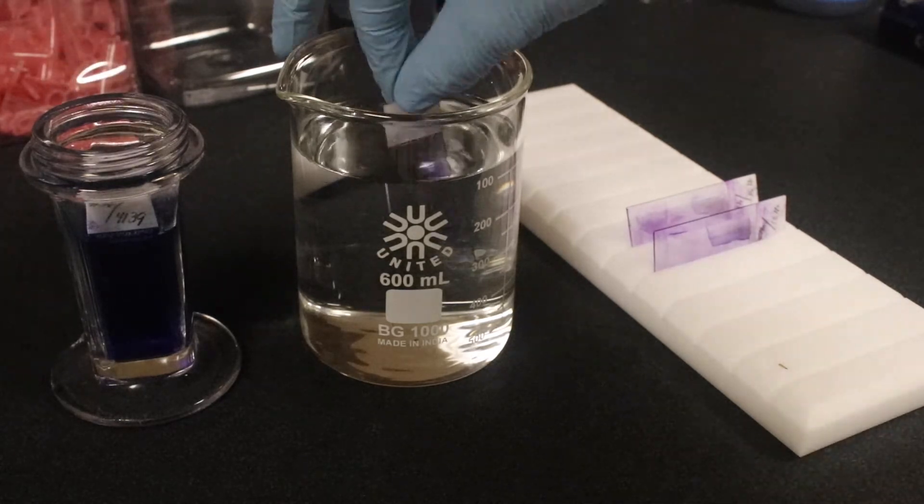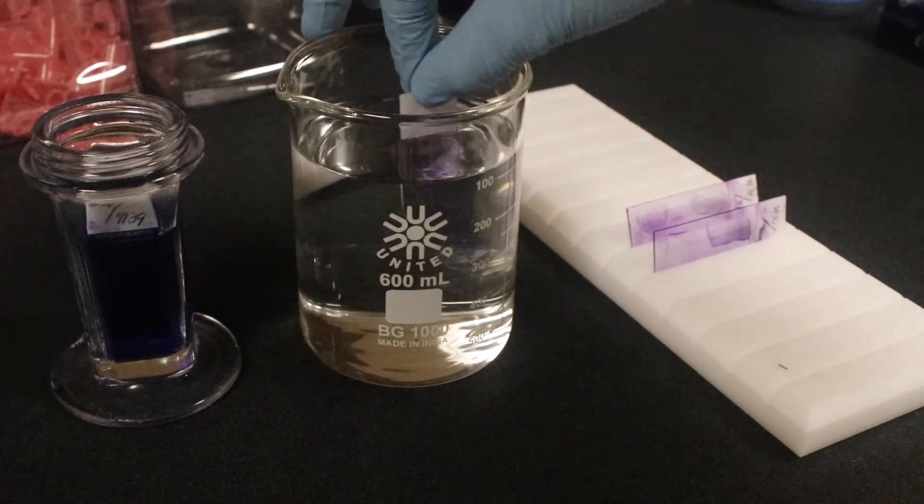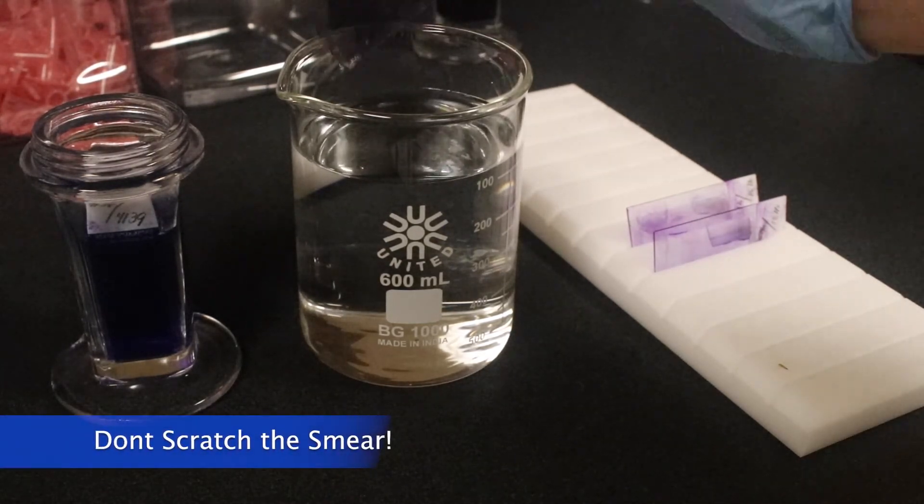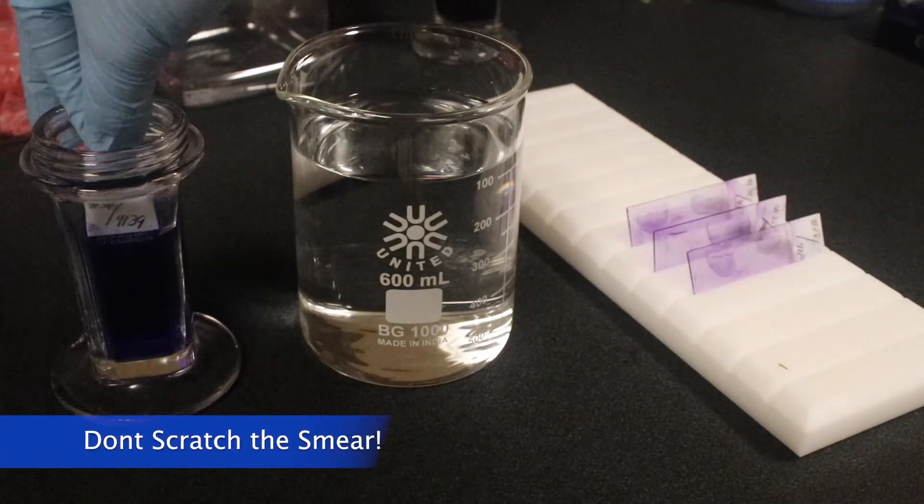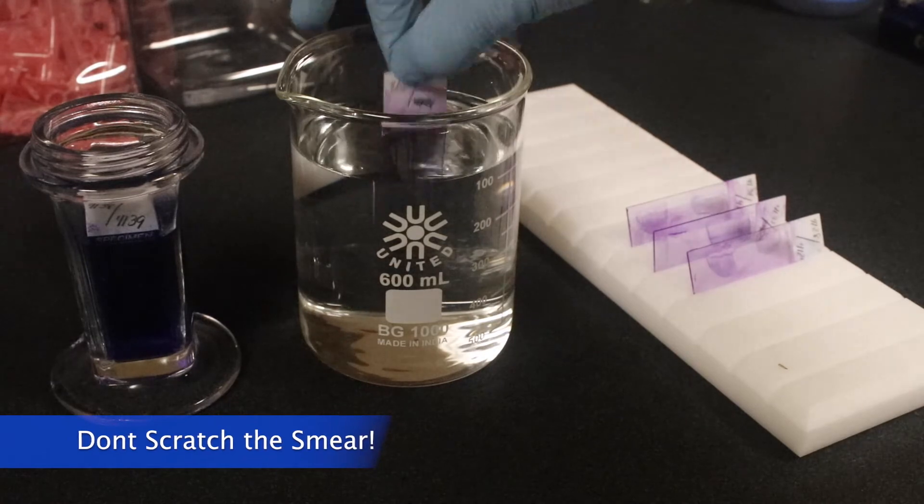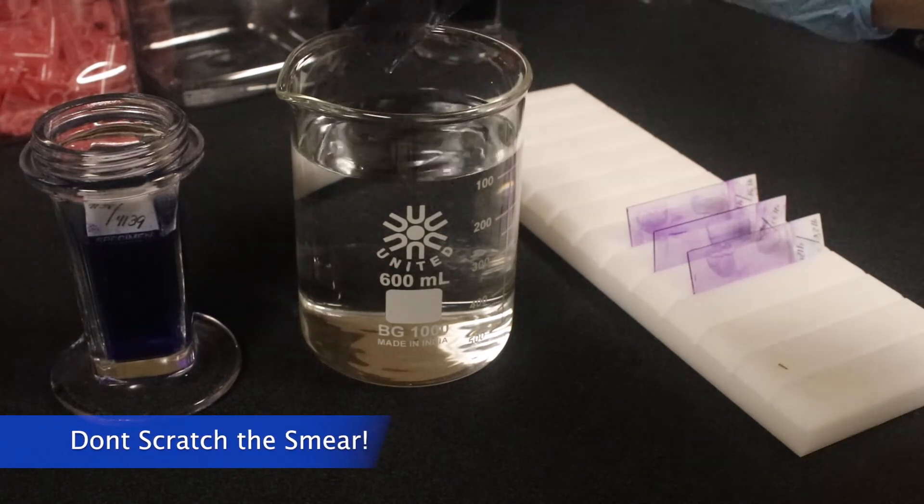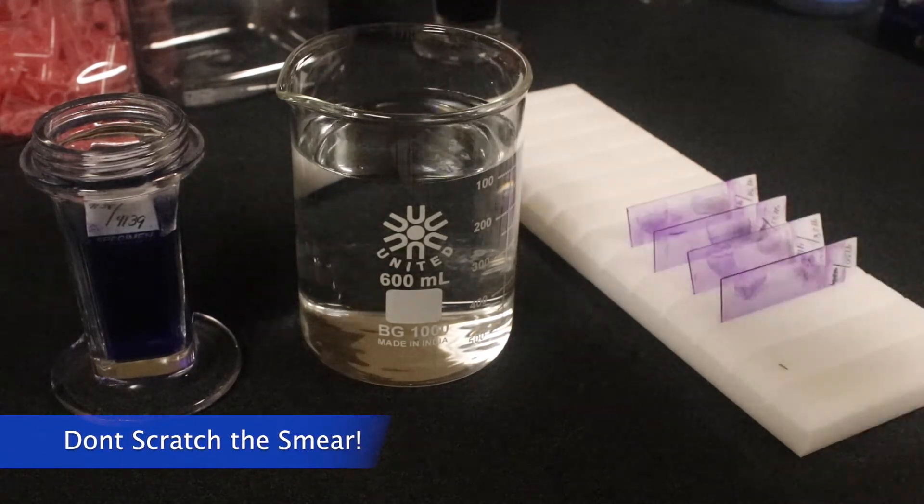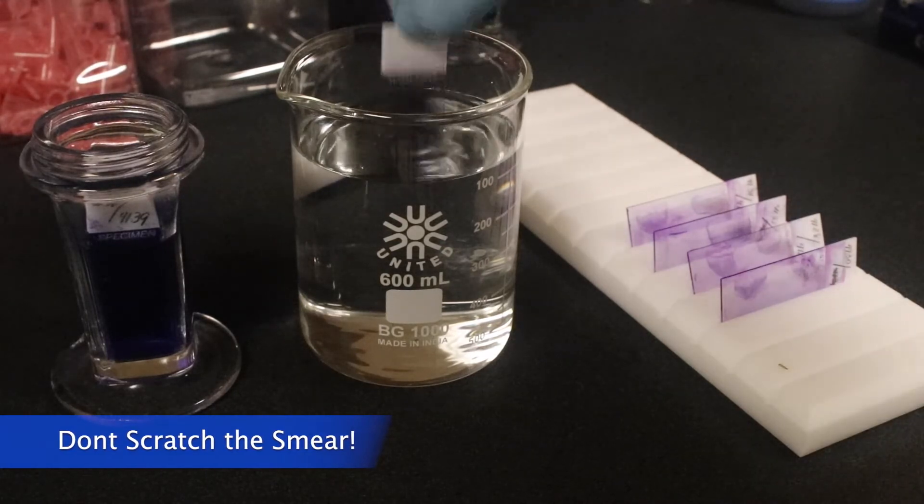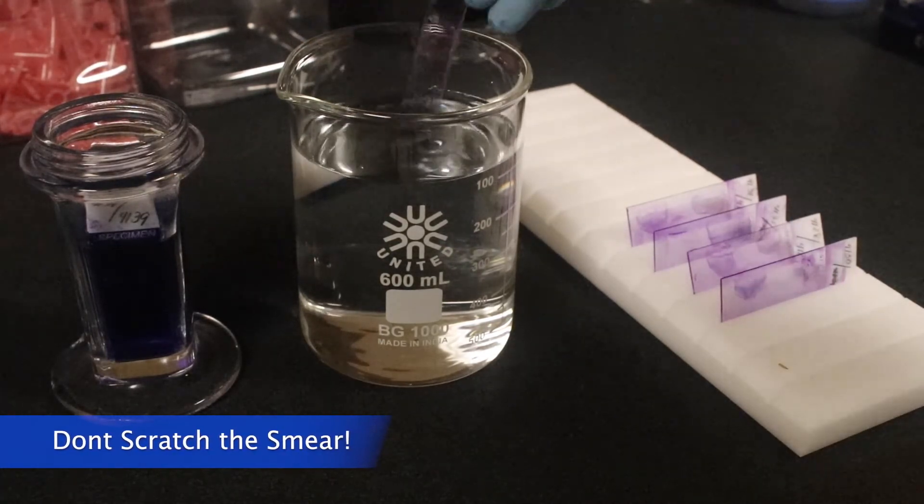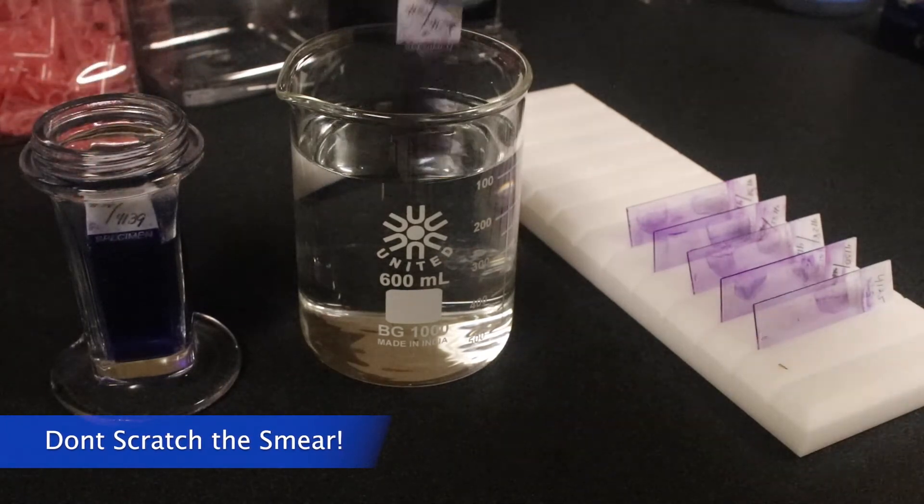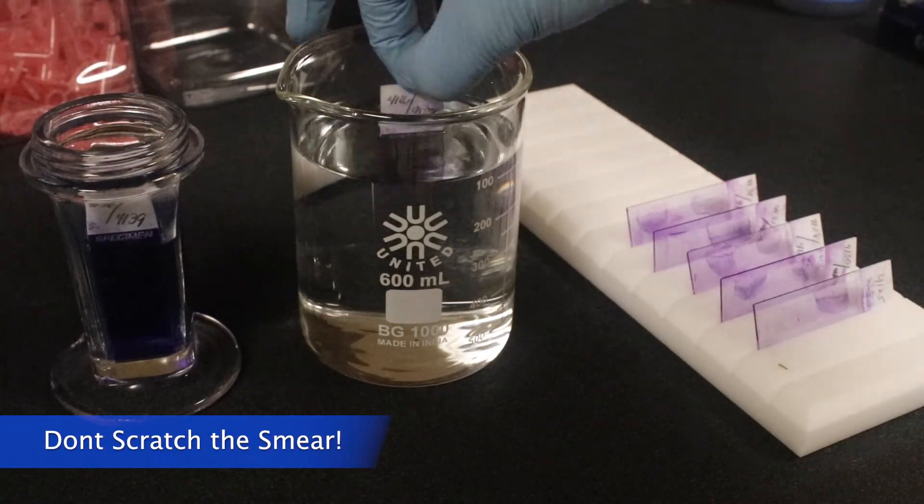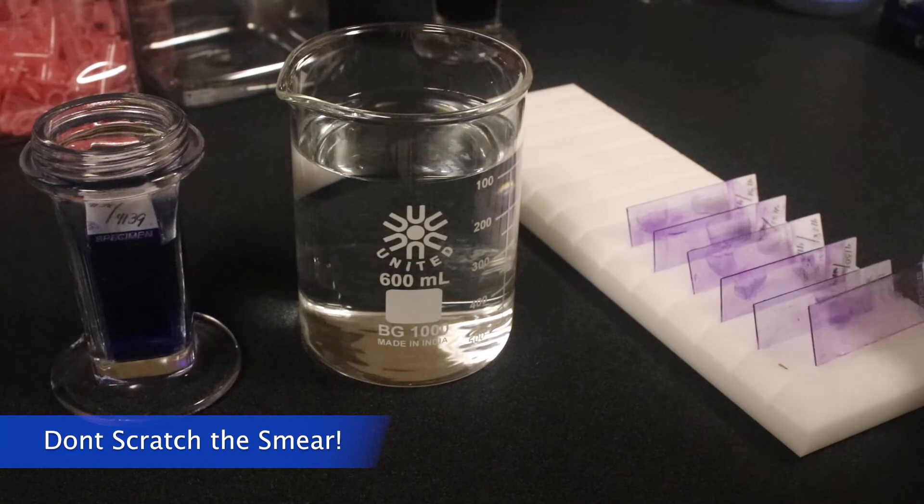Now, it's really important that when we're placing them on the drying rack, we're going to orient them so that the smear is not at the bottom because we don't want to scratch off any of the cells that we have on our slide. So just make sure that the side that doesn't have smear on it is the one that's going on the bottom.